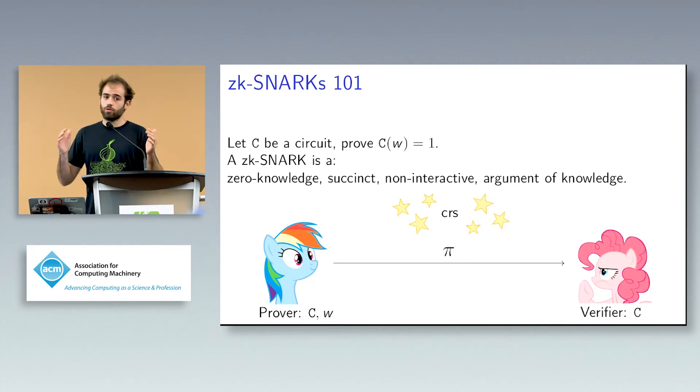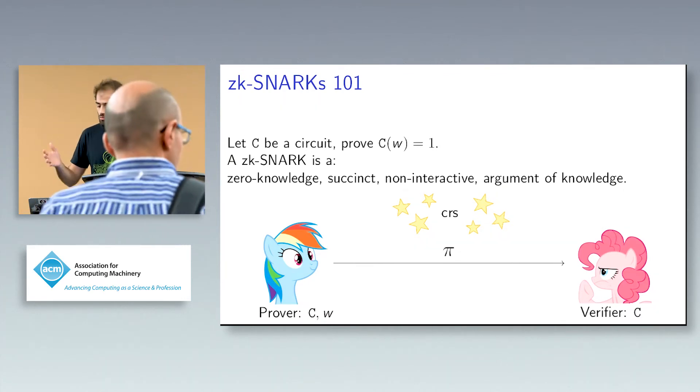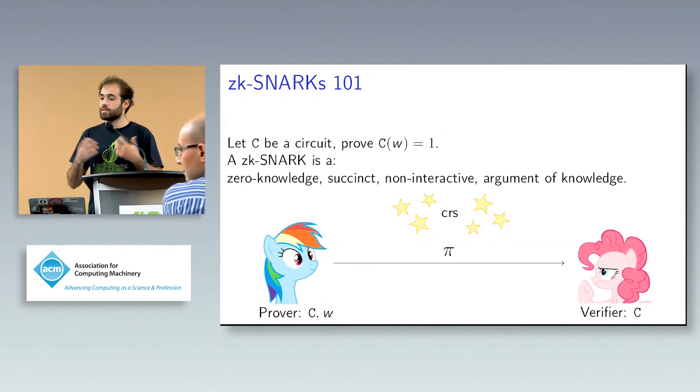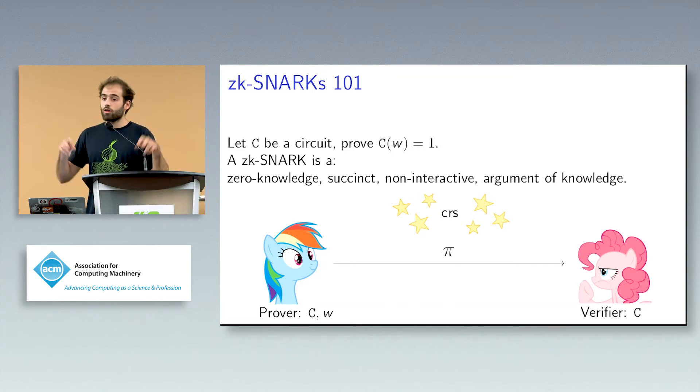So there are already some foundational results that tell us that zero-knowledge argument of knowledge sort of balance each other out, so we cannot have this in the standard model. So the way we study these objects is in general in the CRS model. Basically, we assume that even before the parties start to run the protocol, there is this setup that produces a common reference string. You can see that as a public key. And using this sort of public key generated via the setup algorithm, the prover and the verifier can carry out this protocol. And this will be useful in the security proof.